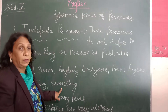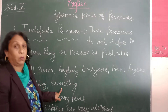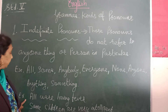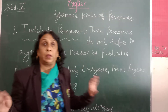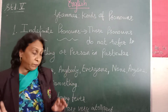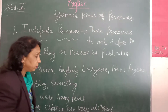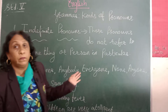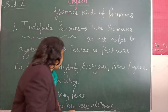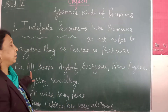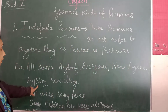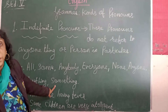Some examples of indefinite pronouns are: all, some, anybody, everyone, none, anyone, anything, and something. For example, 'All were having fever' — here we are not saying one person was having fever, it refers to a group. Similarly, 'Some children are very intelligent' — we are not talking about any particular child. These are the indefinite pronouns.